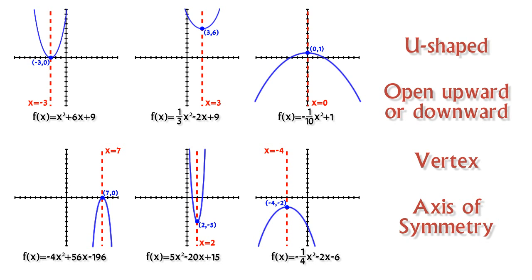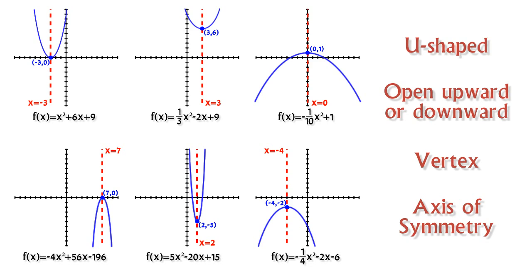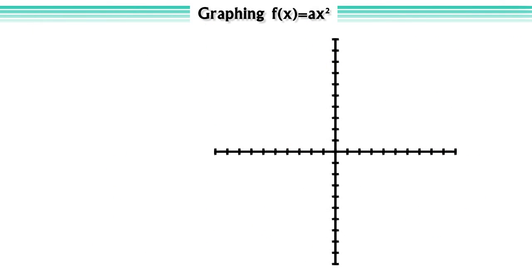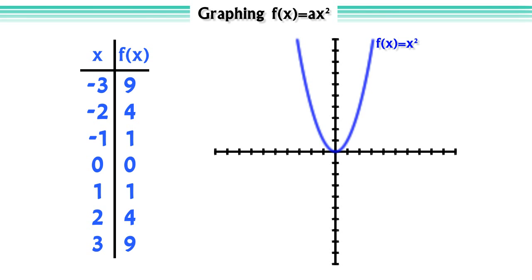We want to develop our instinct about graphing quadratic functions with these properties in mind. Let's start by graphing the most basic quadratic function, f(x) = x², by plotting points. We see its vertex is located at (0, 0) and its axis of symmetry is the line x = 0.